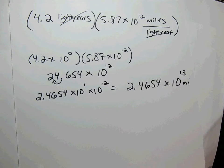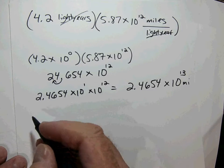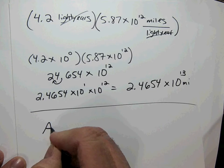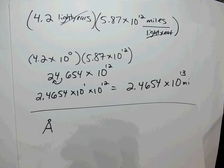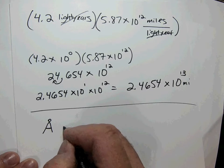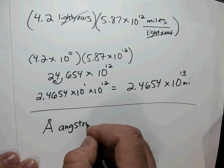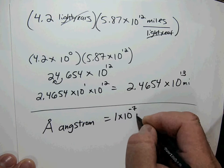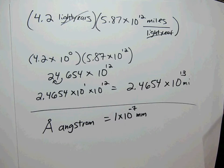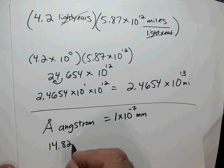Let's check out Example 8, which involves the angstrom — another small unit in science. An angstrom is written as the letter A with a small circle on top. It's defined as 1 times 10 to the negative 7 millimeters — a very small measurement.